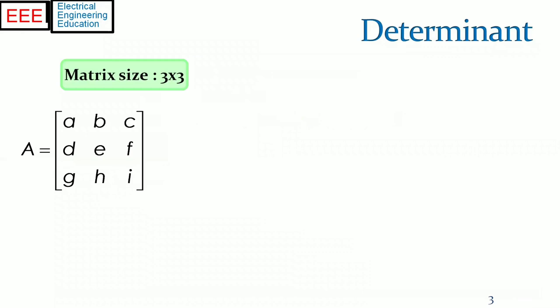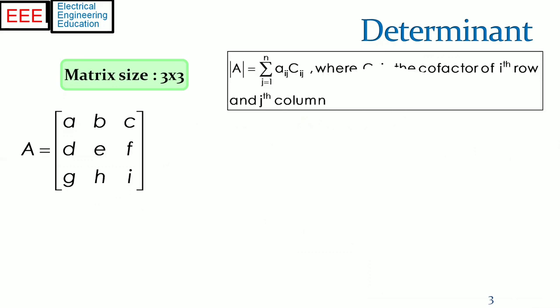This procedure can be extended to give a recursive definition for the determinant of an n by n matrix, known as Laplace expansion, where the determinant can be obtained with respect to any row or column. The elements of a given row or column are multiplied with corresponding cofactor and summed together.